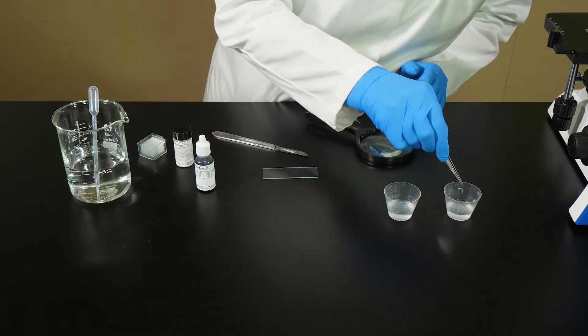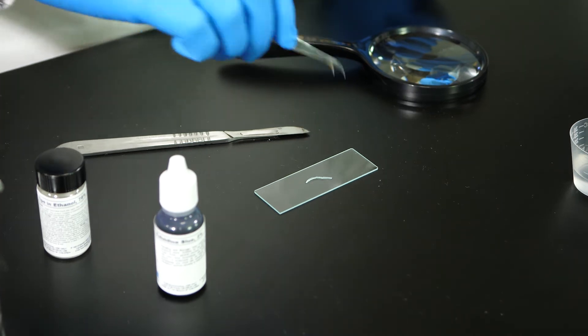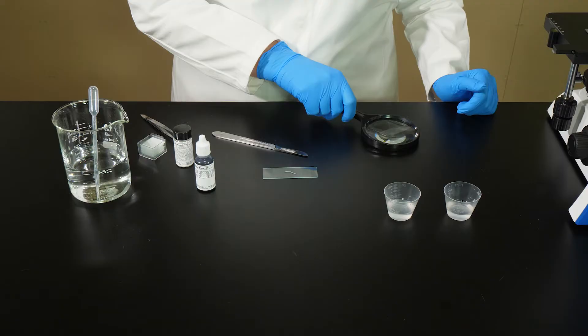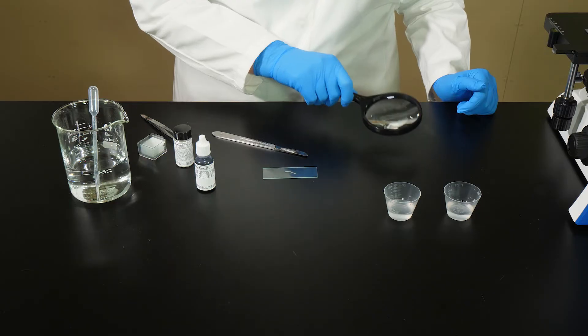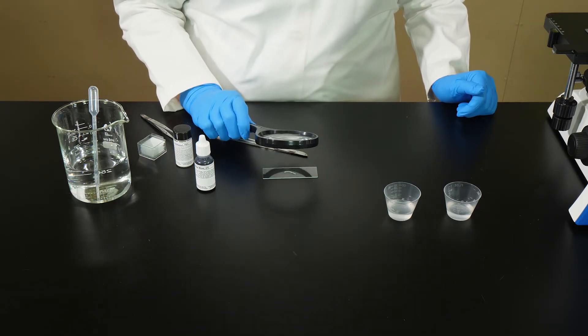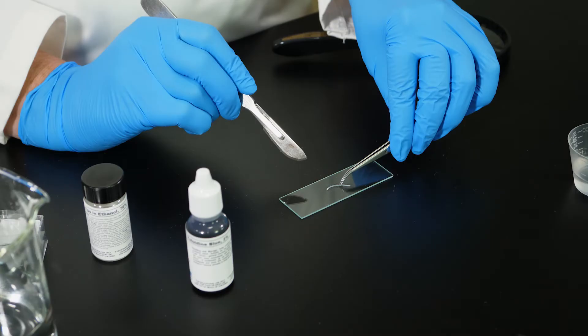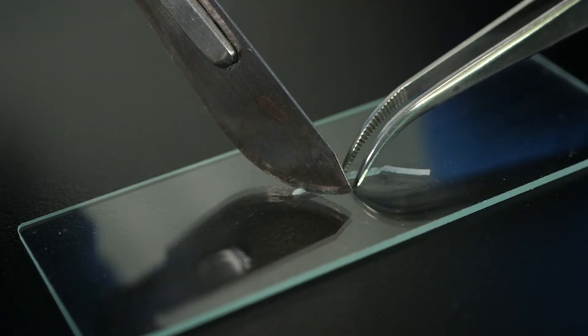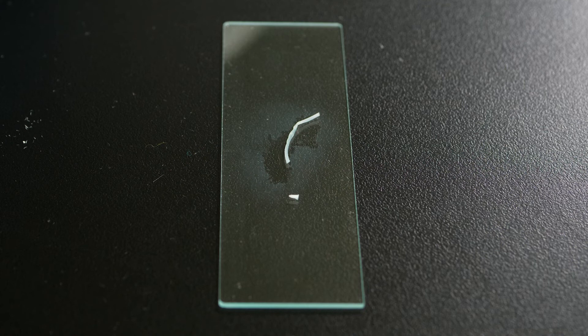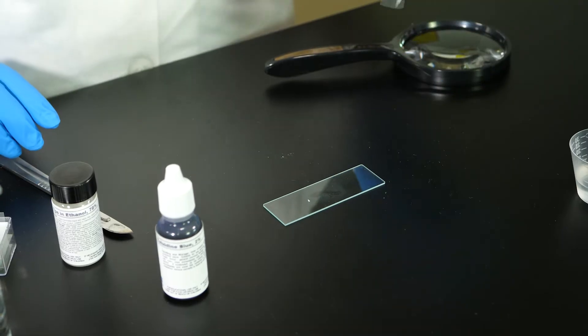After the sample soaks for four minutes, we transfer it to a clean microscope slide. We need to examine the onion root tip to determine which end is the terminal end. The terminal end of this sample is the rounded end. Since the root is so thin, a magnifying glass will help us identify the terminal end. Once we have identified the terminal end of the root tip, we hold it down with the forceps and use a scalpel to slice off a section about two millimeters from the terminal end. This is the sample we will examine. The rest of the root tip can be discarded.